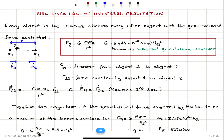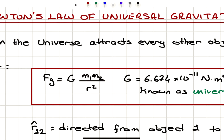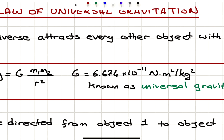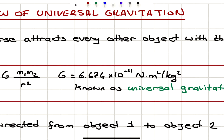This attractive force between the two particles has a magnitude given by the universal gravitational constant G, multiplied by the product of the masses M1 and M2, divided by the square of the distance between the two masses. The gravitational constant G has a numerical value of 6.674 × 10⁻¹¹ Newton·meter² per kilogram².